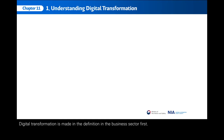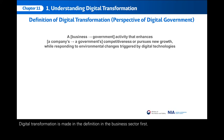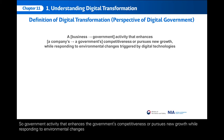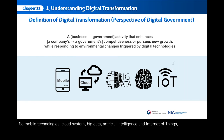Digital transformation was defined first in the business sector. So we can replace the term business or company with government. Government activity that enhances the government's competitiveness or pursues new growth while responding to environmental changes triggered by digital technologies — such as mobile technologies, cloud systems, big data, artificial intelligence, and Internet of Things — all these technologies consist of the new technology in digital transformation.